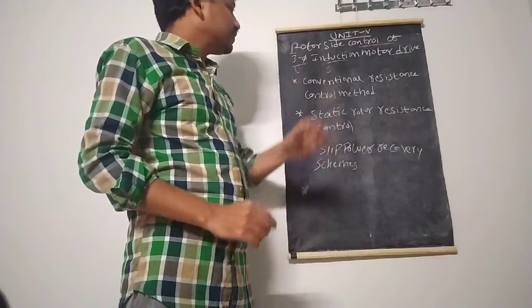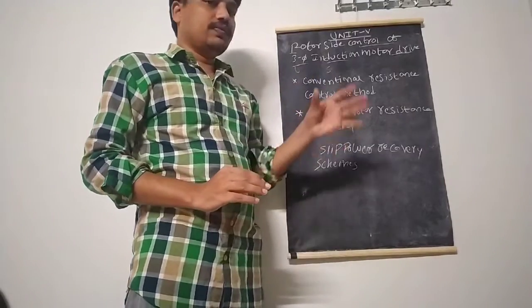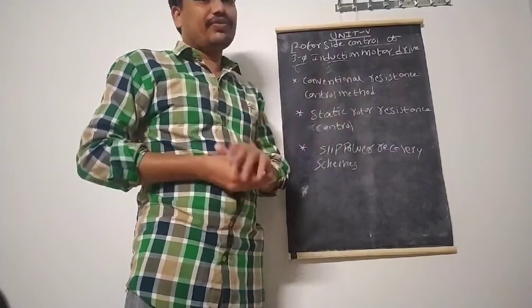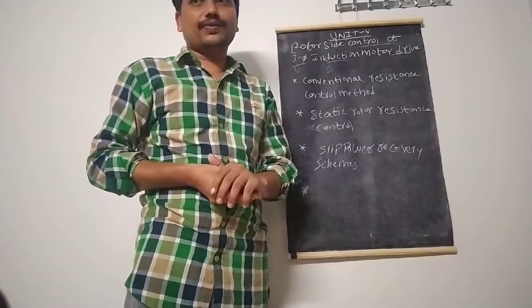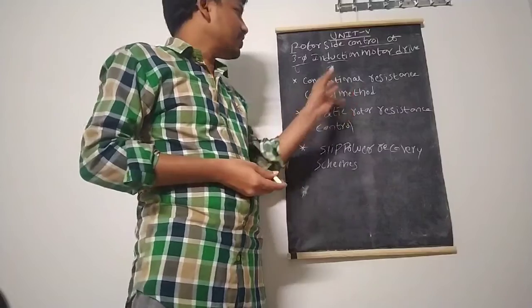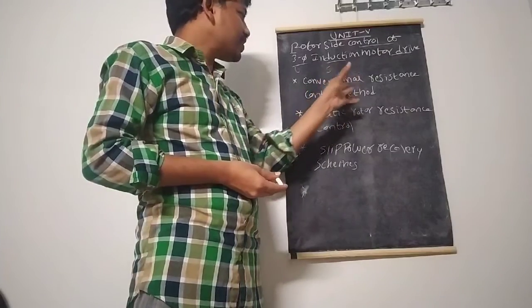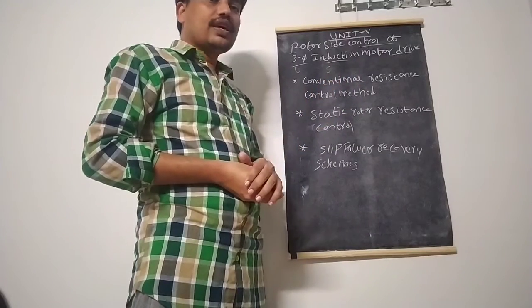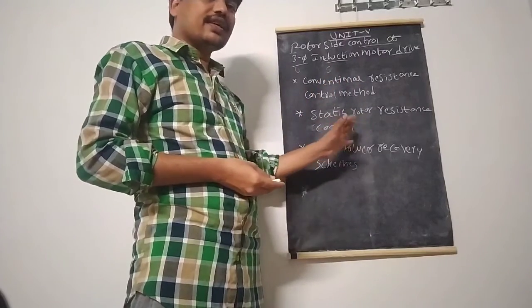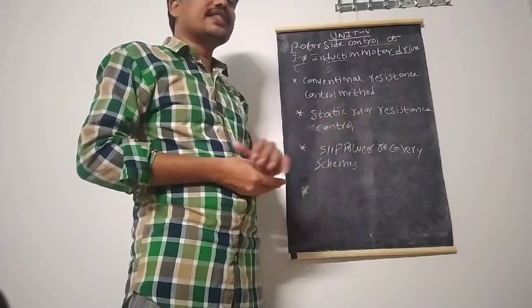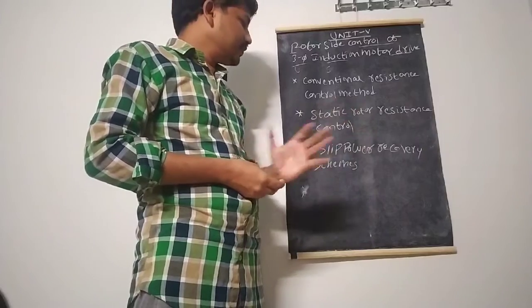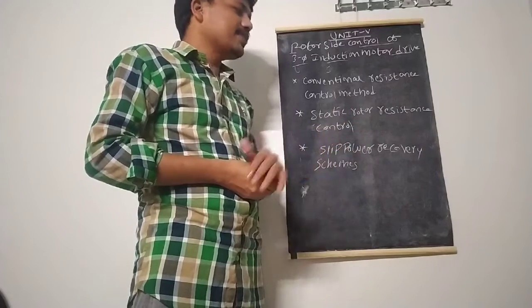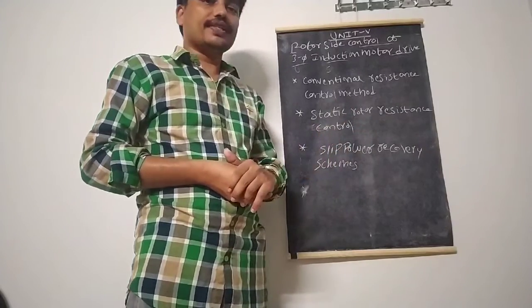According to our syllabus, there are different kinds of rotor side control methods. The first one is the conventional resistance control method, the second is the static resistance control method, and the third is the slip power recovery schemes.